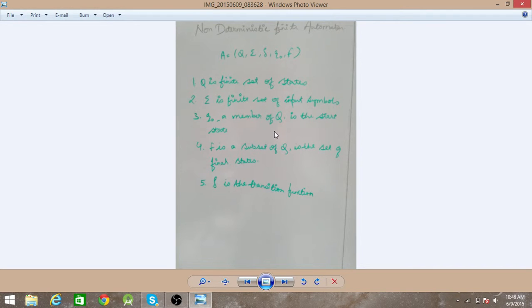Q0 is the start state. F is the subset of Q which is a set of final states. And delta is the transfer function.